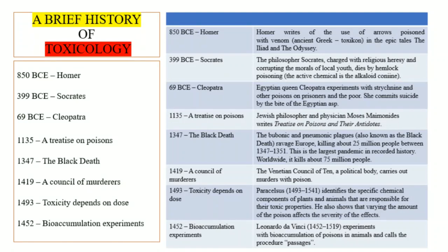In 1347, the Black Death — bubonic and pneumonic plagues, also known as the Black Death — ravaged Europe. This was the largest pandemic in recorded history, with approximately 75 million people dead worldwide. Then in 1419, a Venetian Council of Ten was a political body known to employ poisoning and murder.